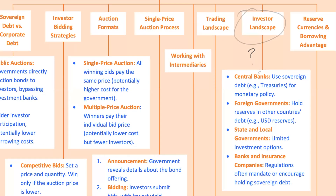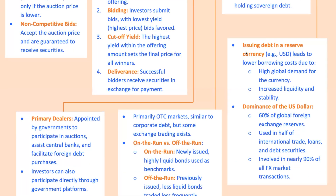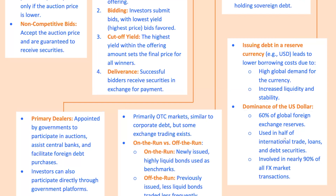Sovereign debt attracts a wide range of investors, from central banks using them for monetary policy to foreign governments holding them as currency reserves, to banks and insurance companies meeting regulatory requirements. The U.S. dollar is the world's reserve currency — about 60 percent of global foreign exchange reserves are held in U.S. dollars — making U.S. Treasuries extremely popular among foreign governments, central banks, and international investors.